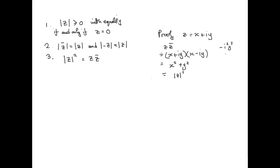That quantity, x squared plus y squared, is the modulus of z without the square root sign — so it's the modulus of z squared. That's the proof: the modulus of a complex number squared is identical to the real number you get when you multiply the complex number by its conjugate.